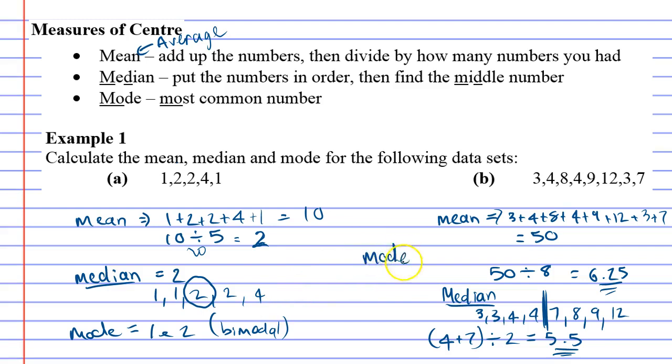And we'll find the mode here for question B. Let's see. We've got two 3s, two 4s. This one's bimodal as well. So the mode is 3 and 4 because it's bimodal.